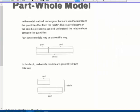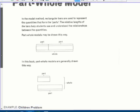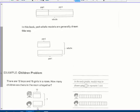Next page, a part-whole model. In the model method, rectangular bars are used to represent the quantity that forms the parts. The relative lengths of the bars help the students to see and understand the relationships between these two quantities. Part-whole models may be drawn this way. So they can be drawn as a part plus a part makes a whole. Or a part and then drawn underneath.